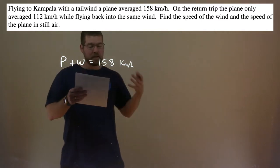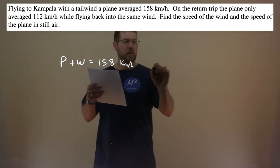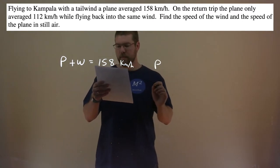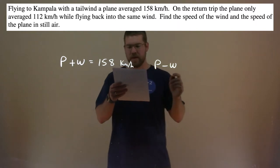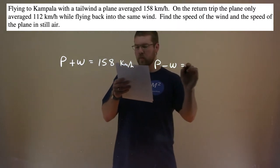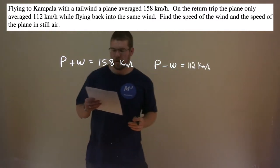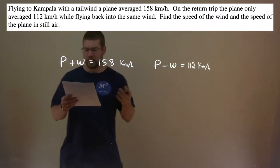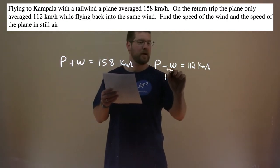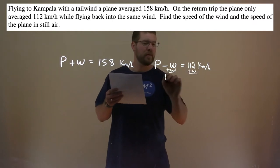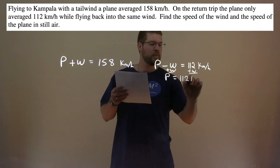On the return trip, flying back, we have the plane speed minus the tailwind — because now we're going into the wind — and that was equal to 112 km per hour. Now we have two equations. Let's solve. Taking the second one, let's get P by itself. We add W to both sides, and P equals 112 plus W.